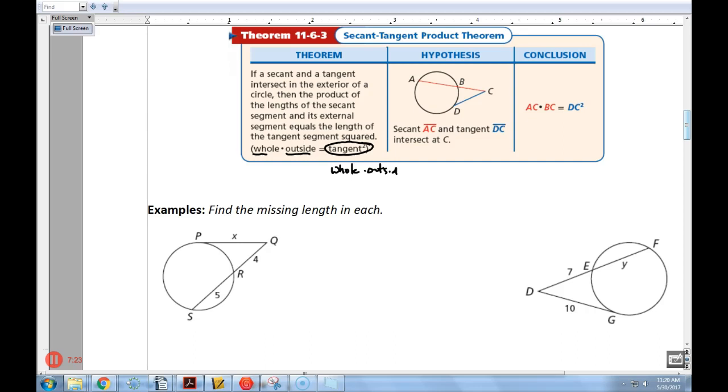So let's do this one. So we're going to do the whole piece, the secant's whole piece, that's 9, times the outside, equals the tangent squared, or the whole times the outside, which would be X times X. So we solve this. X squared is 36. Take the square root of both sides, and I find out that X equals 6. So that's the missing length we're looking for.